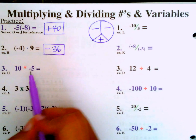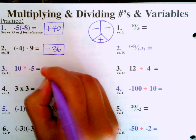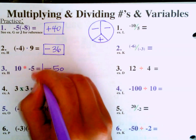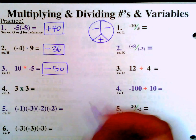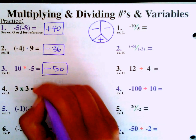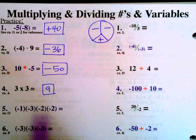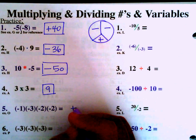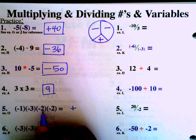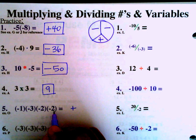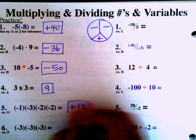Positive times positive is, of course, positive — so that's just positive 9. Now we have a row with an even number of negatives, so the answer is going to be positive. 6 times 2 is 12, so the answer is positive 12.